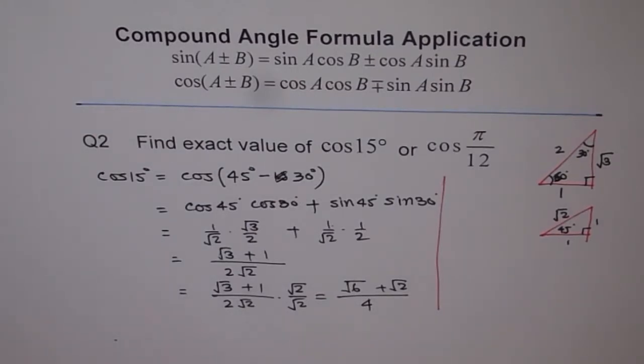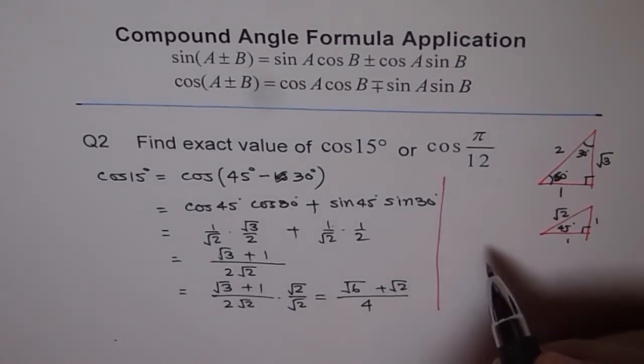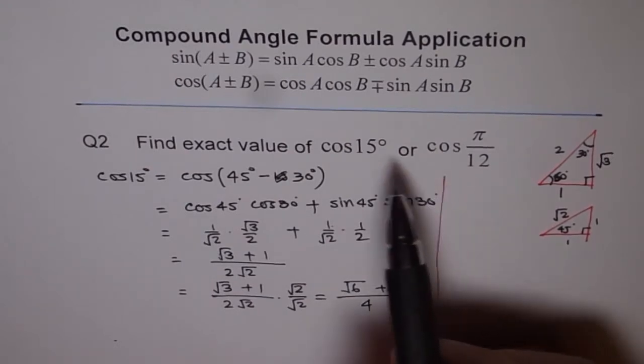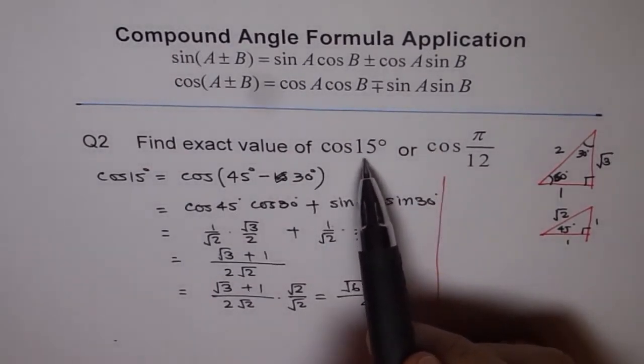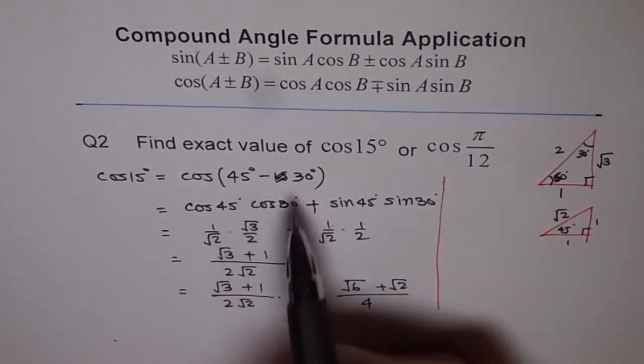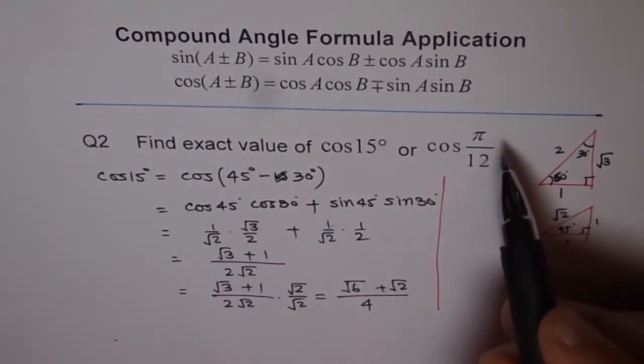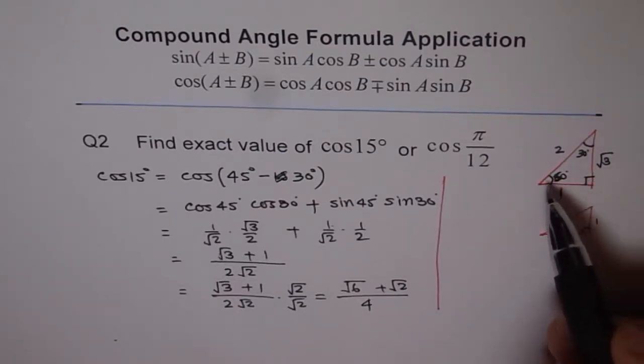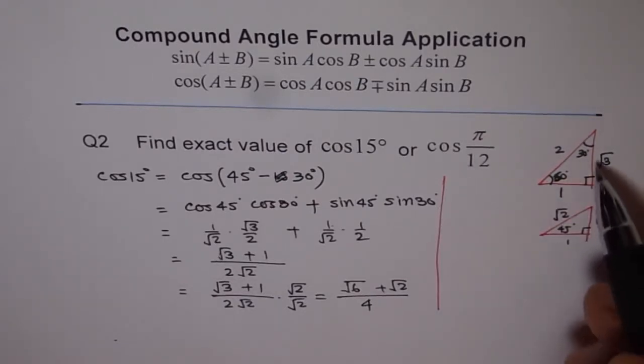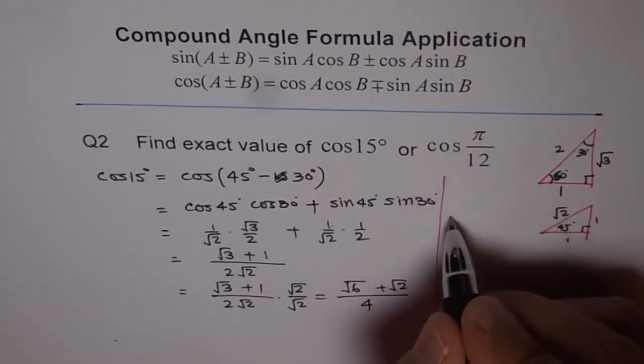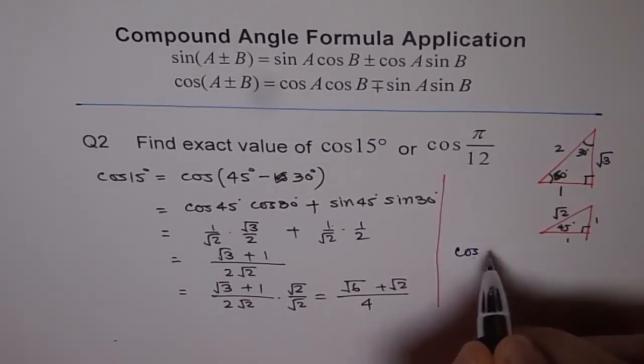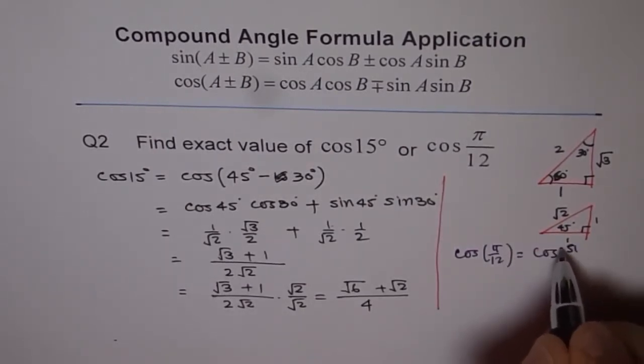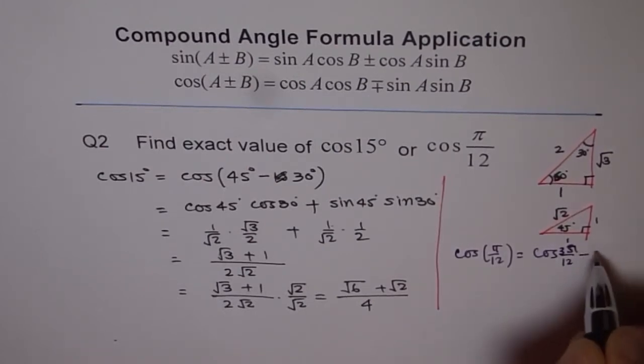For radians, what can we do? To start with we wrote cos of 15 degrees as difference of 45 and 30. So same strategy is in radians. We need to write pi over 12 as angle in which we can use the special triangles. So cos of pi over 12 can be written as cos of 3 pi by 12 minus pi by 12.